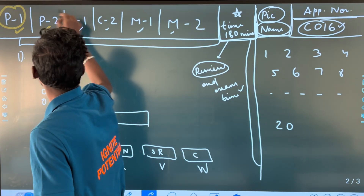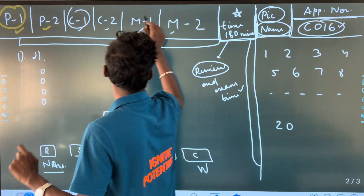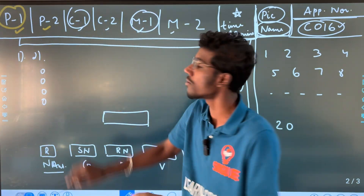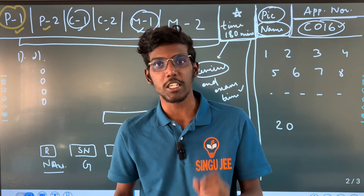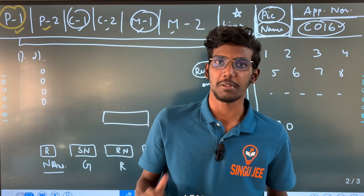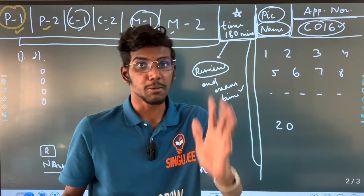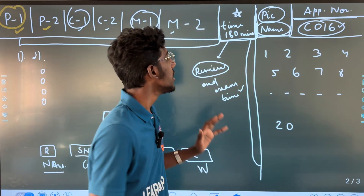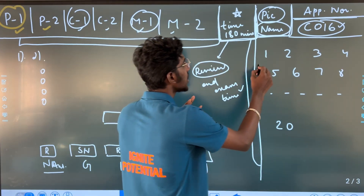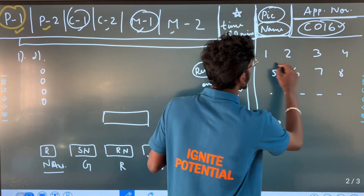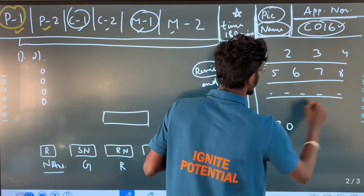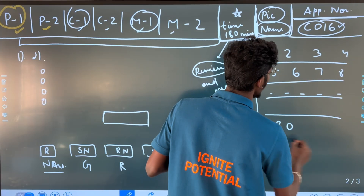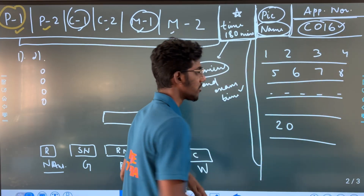So in Physics Section 1, Chemistry Section 1, and Maths Section 1, there are 20, 20, 20 questions in each subject — MCQ type. You can see questions arranged 1, 2, 3, 4, 5, 6, 7, 8, and there are 4 options for each question.